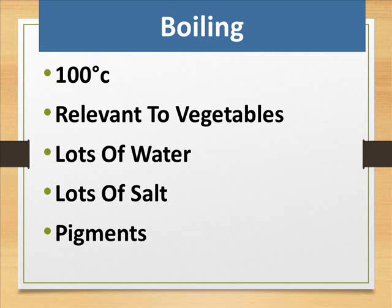Boiling occurs at 100 degrees Celsius. It is relevant to vegetables and requires lots of water and lots of salt. Pigments are also affected.